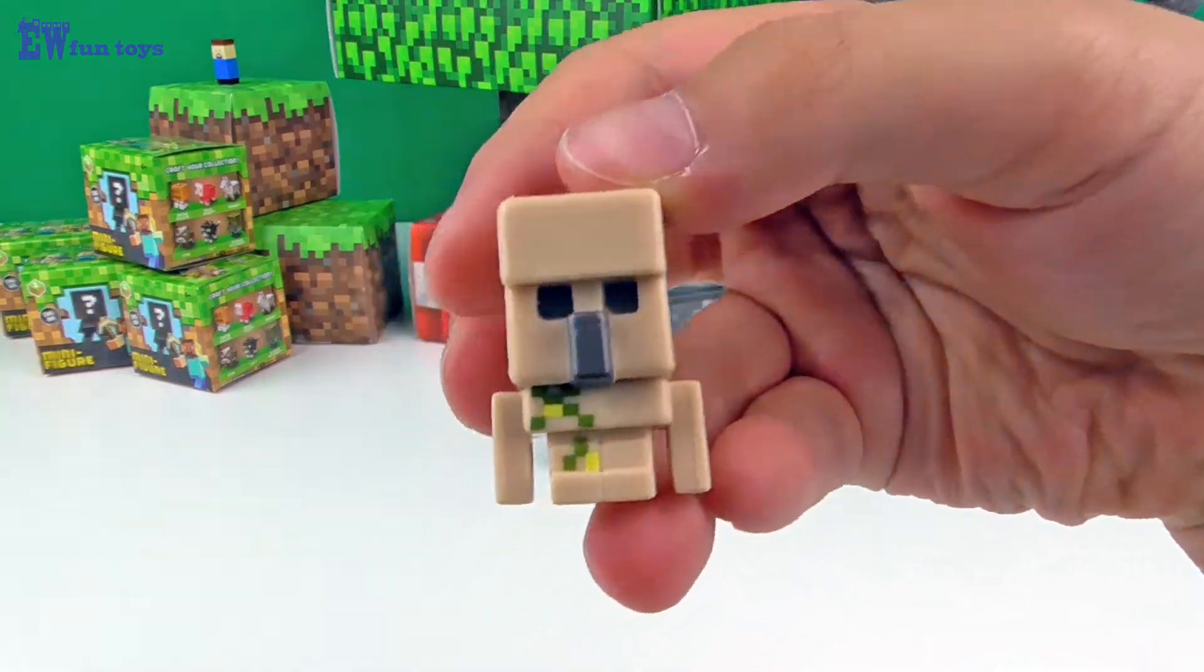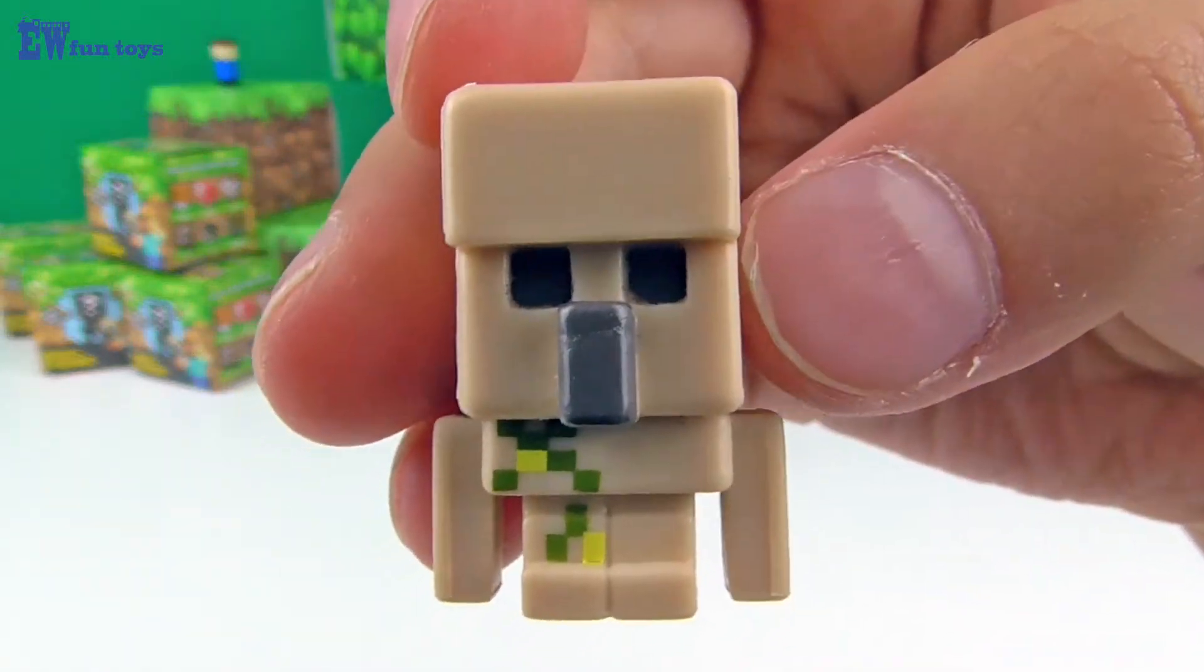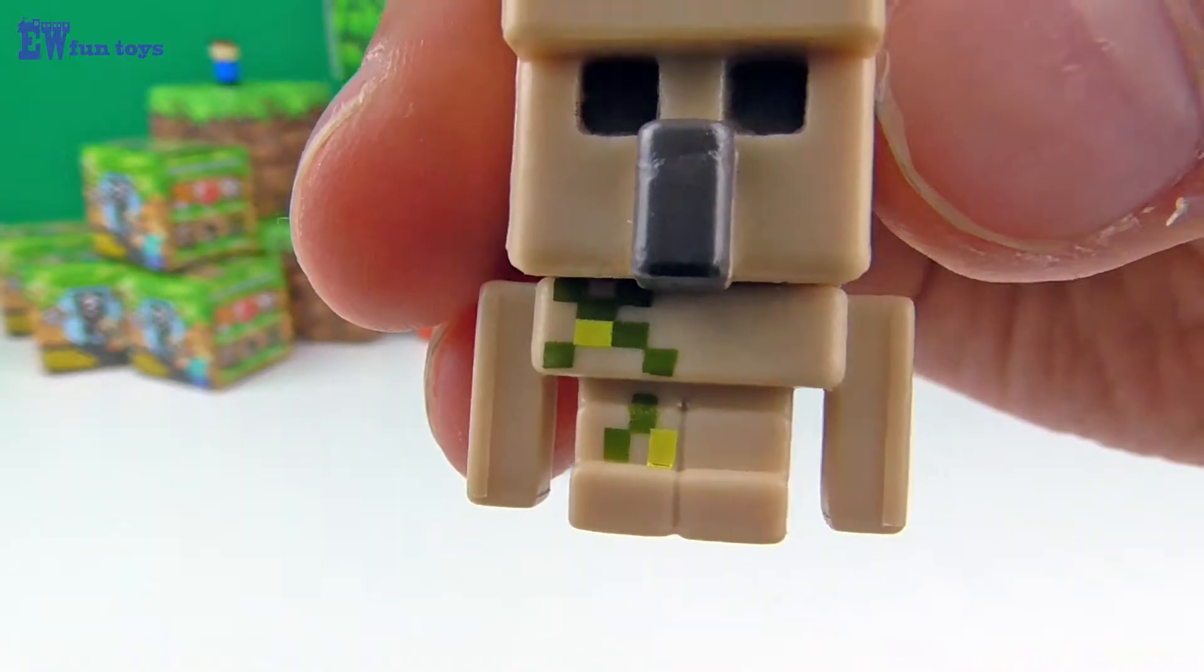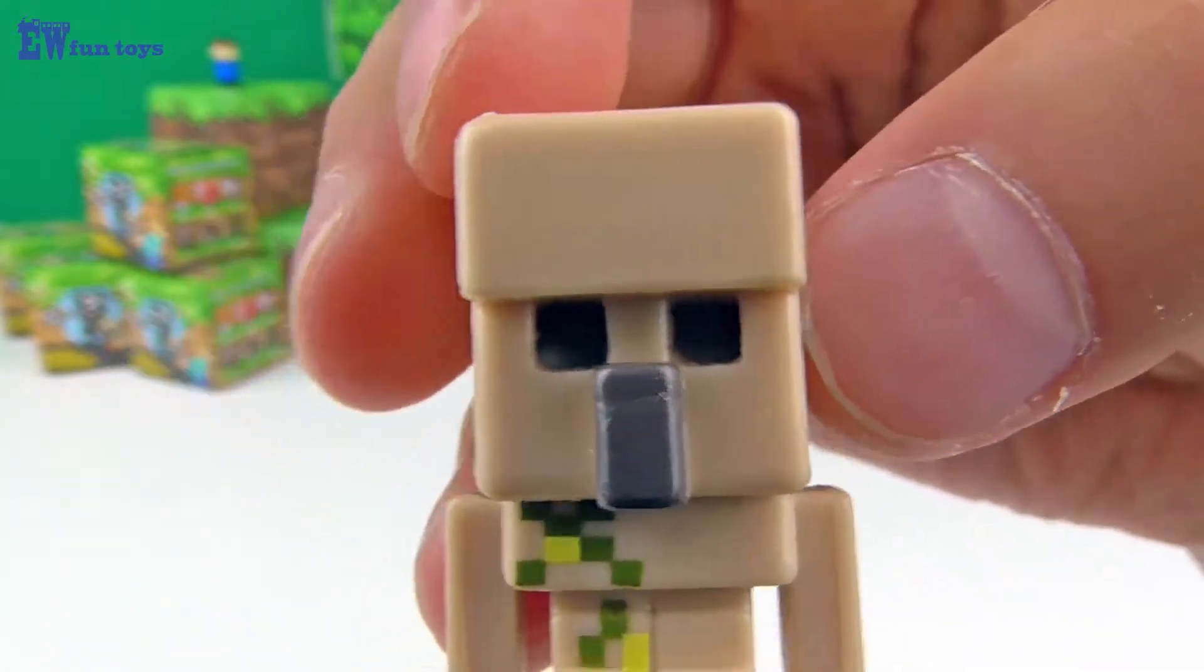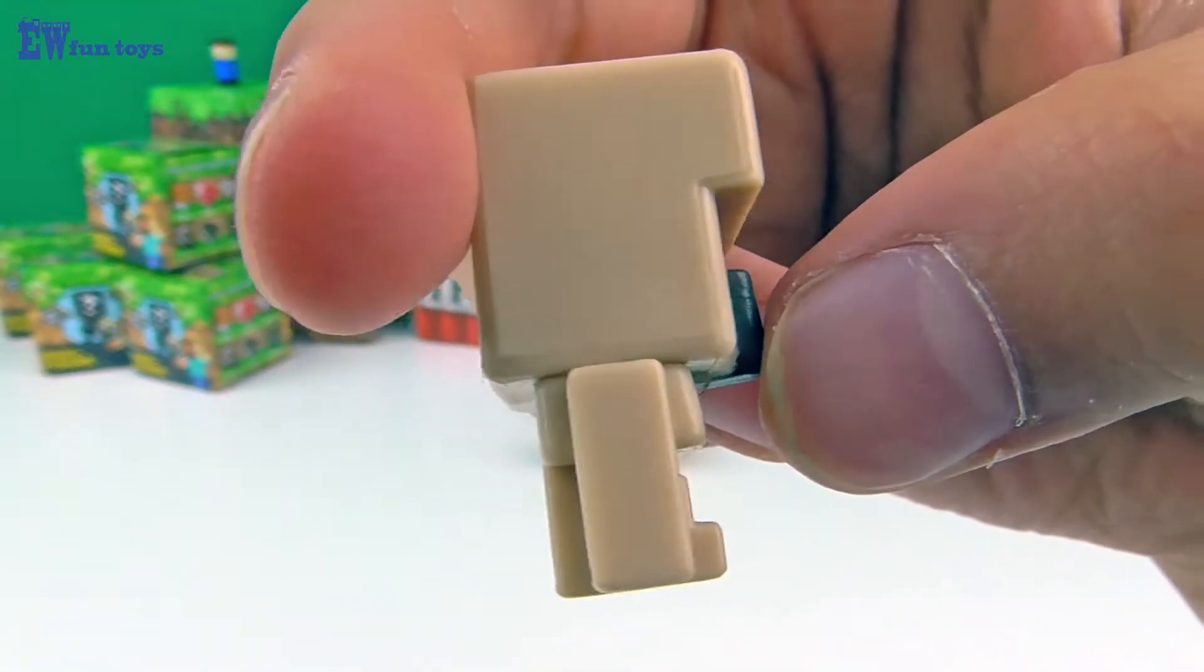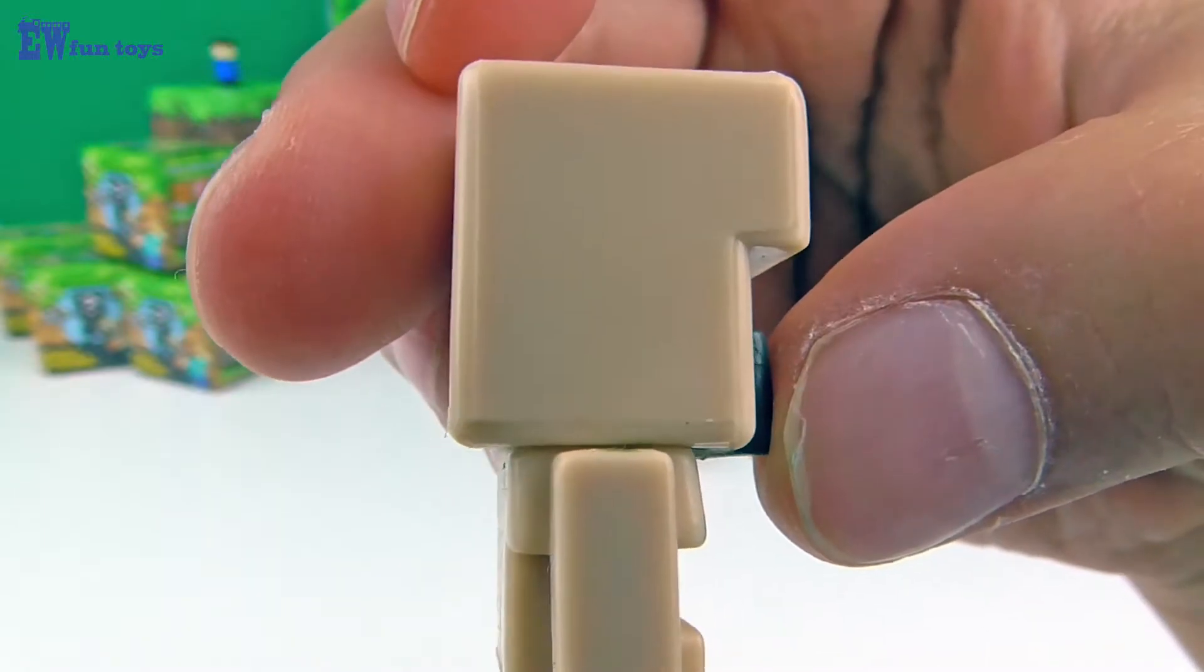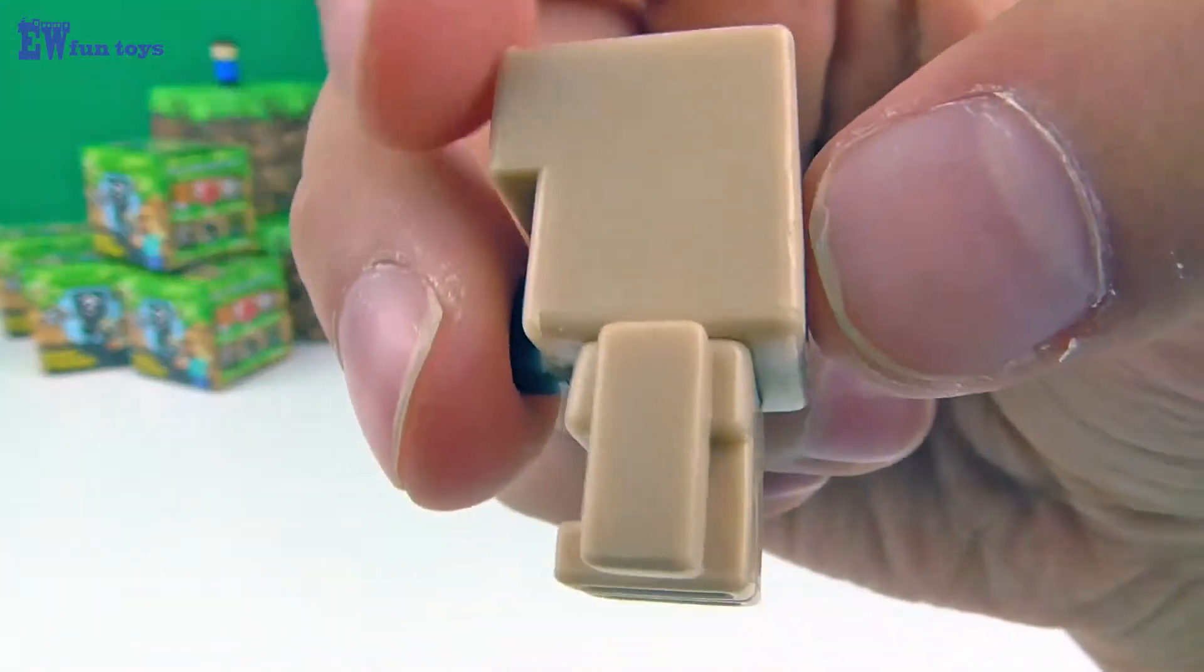Iron Golem. You can make this character by placing two iron blocks on top of each other and two on the middle sides, and then you put a pumpkin on top. The last block must be a pumpkin or else it won't spawn, just like a snow golem. And you may also find it guarding villages.